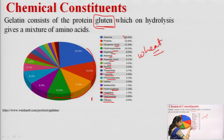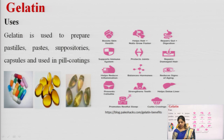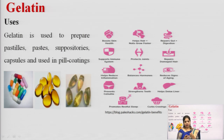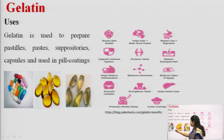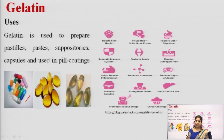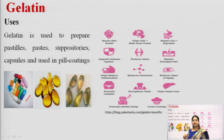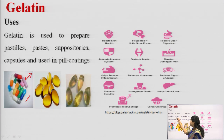This is the pie chart of the amino acids. When we talk about uses, gelatin can be used to prepare pastilles — lozenges which we eat. In preparation it is used in paste preparation, suppositories, capsules, and pill coating. The capsule shells we use are prepared from gelatin obtained from animal sources — skin, tendons, or bones of ox or sheep.